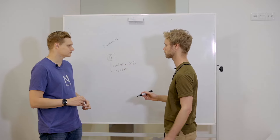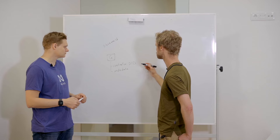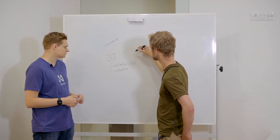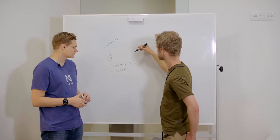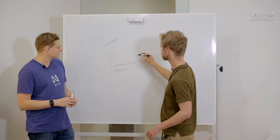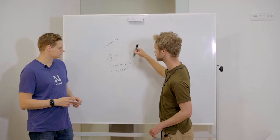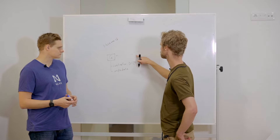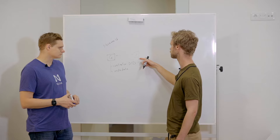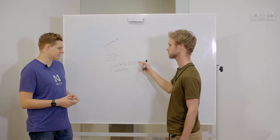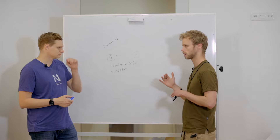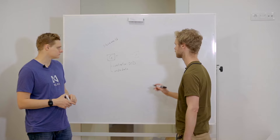Once we have the genesis event, we generate the stream ID — the unique identifier of an object in Ceramic. A user can then create a signed commit, and all of these objects are stored in IPLD. IPLD is essentially a way to represent hash-linked data, so this object has a pointer to the hash of the genesis object. The commit contains a signature issued by the user and a patch describing how the object is updated. In Ceramic we support a tile document, which is essentially a JSON object, and the patch is a JSON patch.